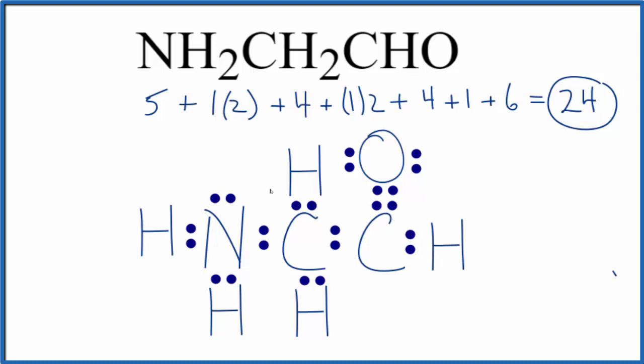This is a good Lewis structure for NH2CH2CHO. Again, we followed the order that we were given in the formula when we did our Lewis structure, so this is what I would expect the Lewis structure for NH2CH2CHO to be.